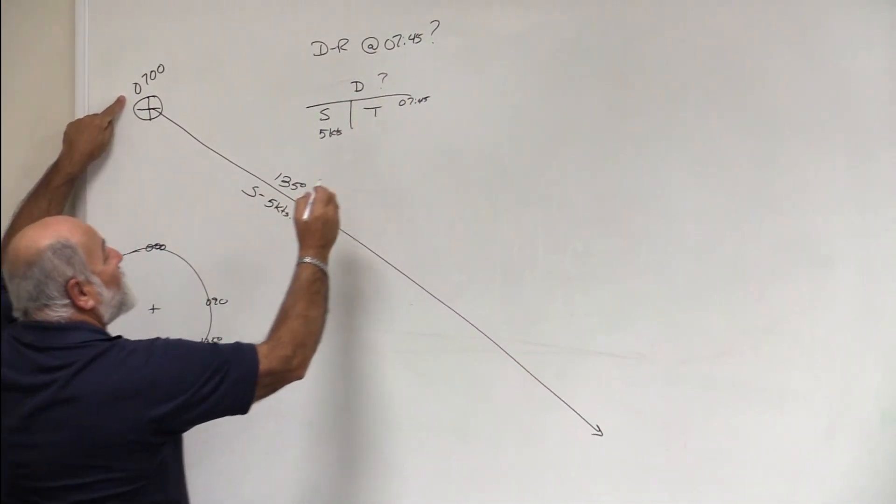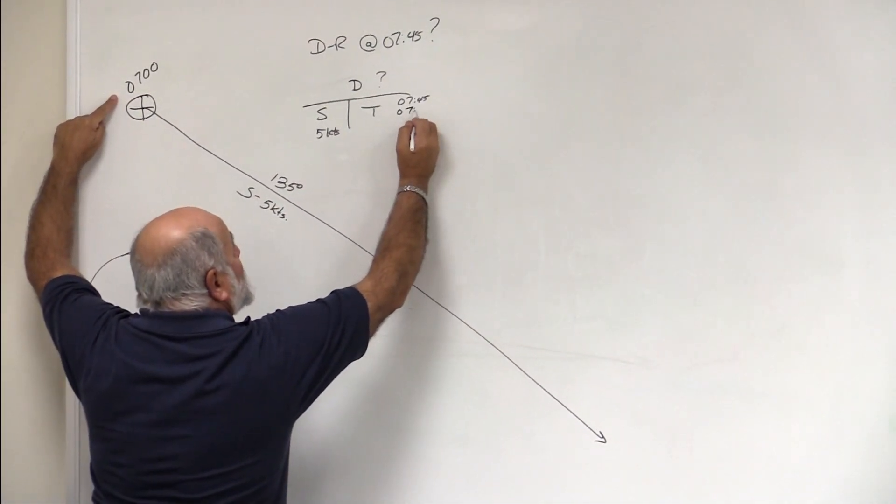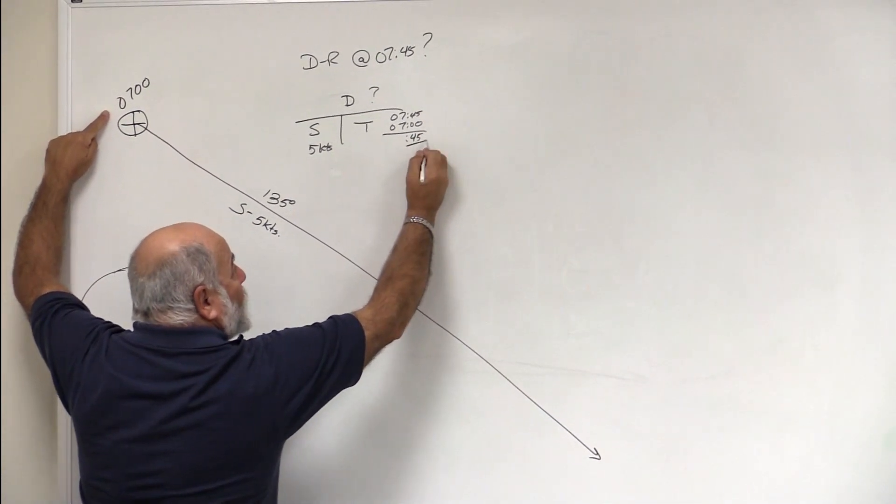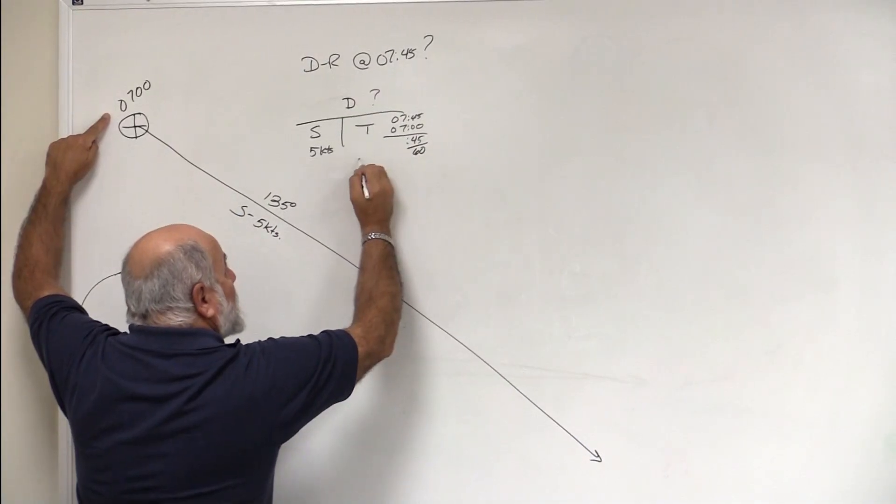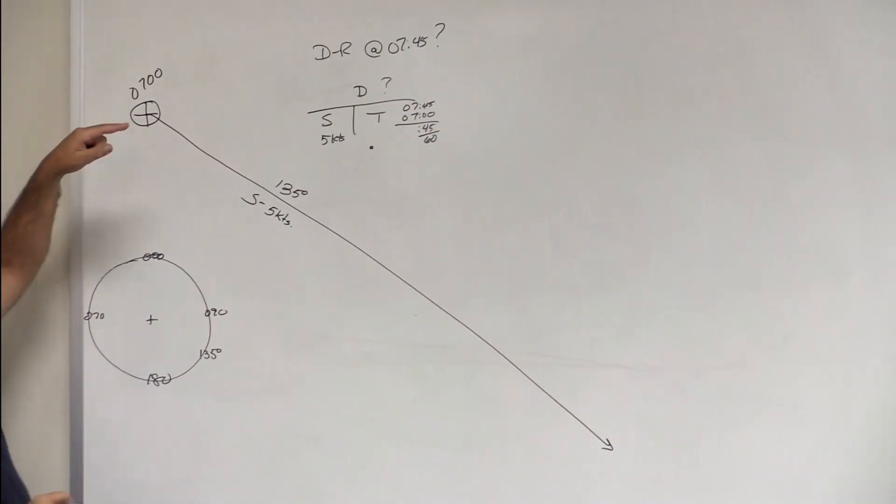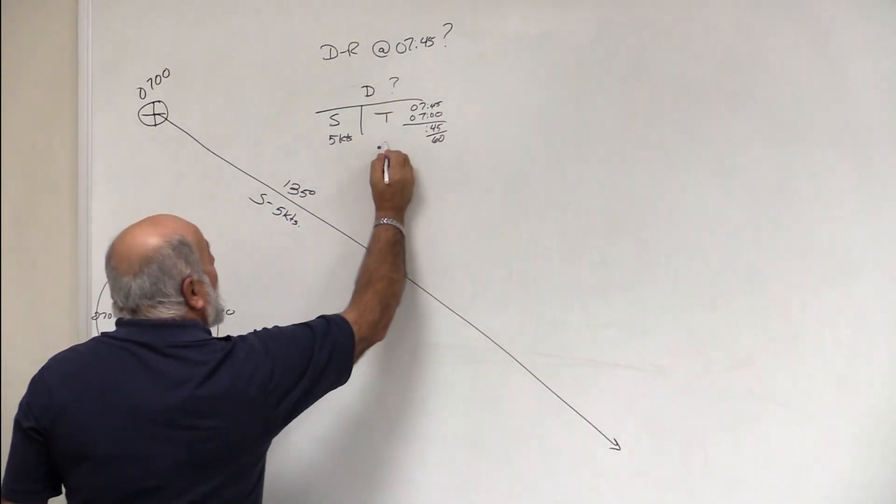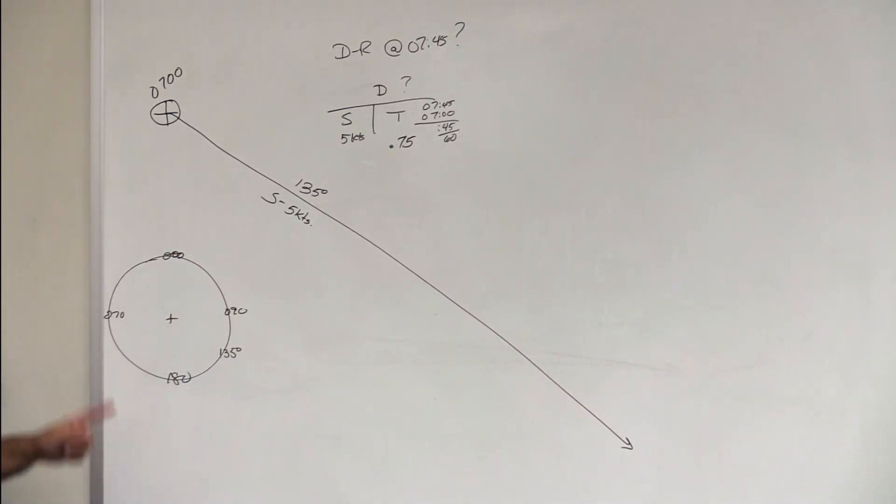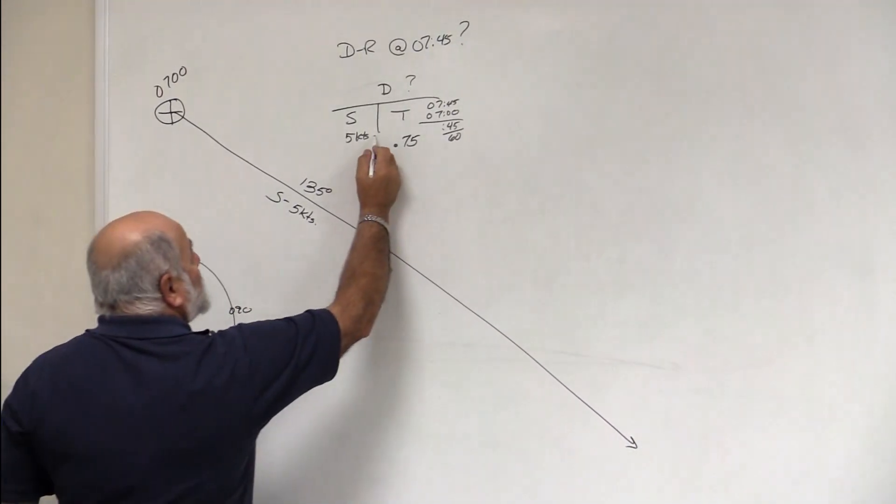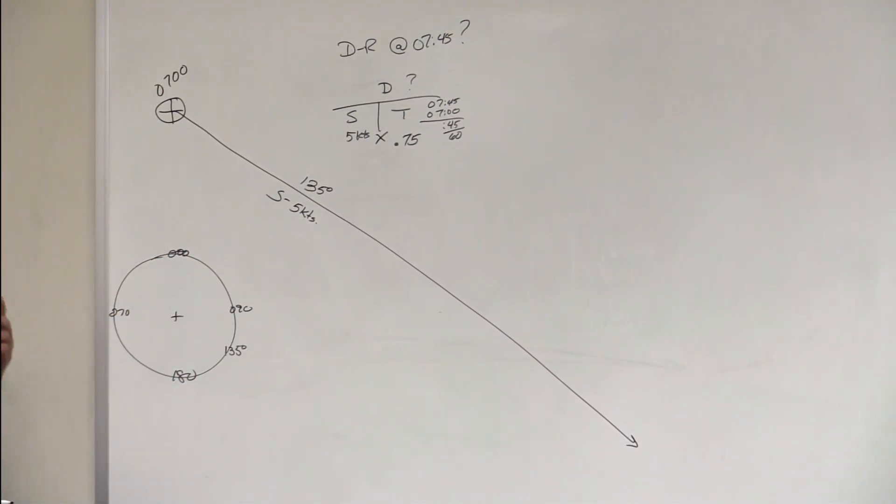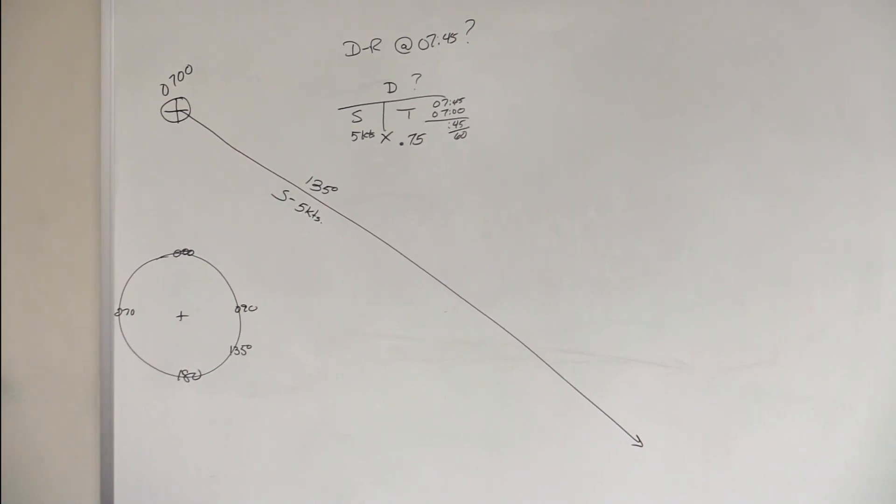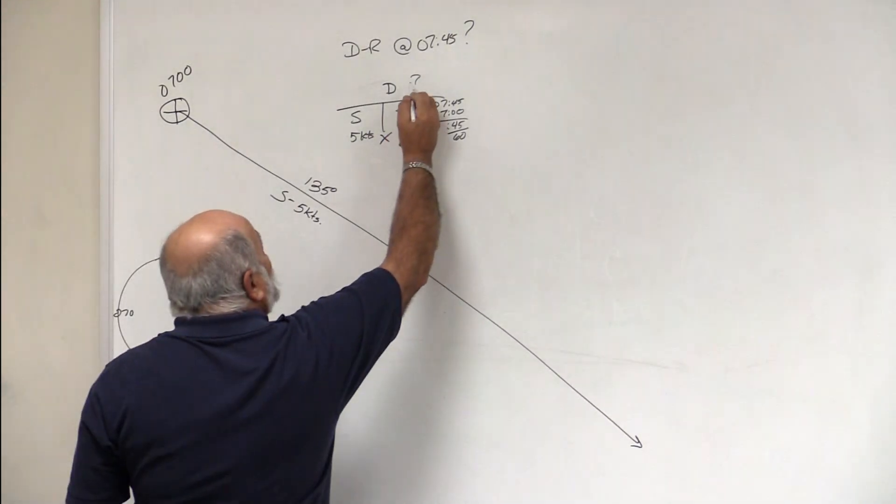Minus 7 o'clock, because that's the time we started, which is 45 minutes. And we take that 45 and divide it by 60 to come up with a decimal time, and mathematically that's going to turn into 0.75. Right, so we take our speed times time and we're going to come up with a distance. Take a calculator, multiply 5 times 0.75—I think you come up with 3.75. So 3.75 is our distance.